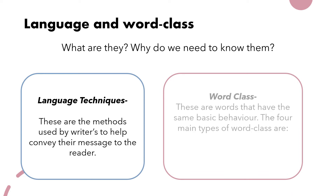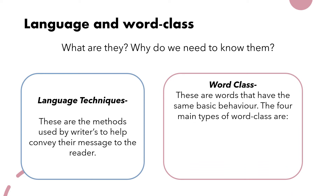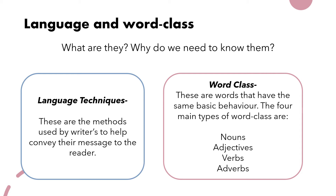Next we have word class. These are words that have the same basic behaviour. The four main types of word class are nouns, adjectives, verbs, and adverbs. These are very important when it comes to analysing writing and understanding the impact and meaning behind the words chosen by the writer.